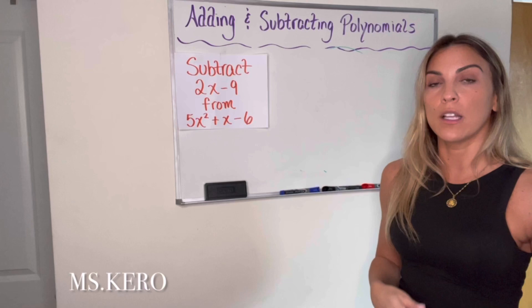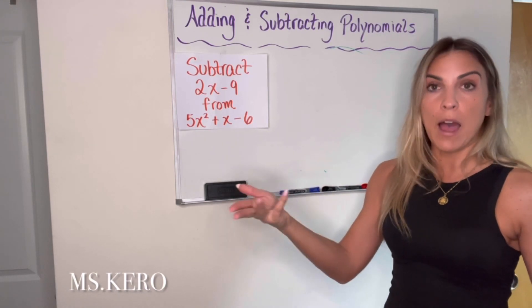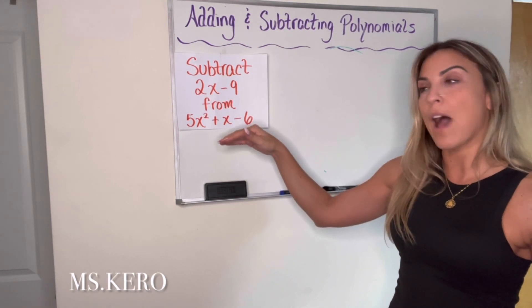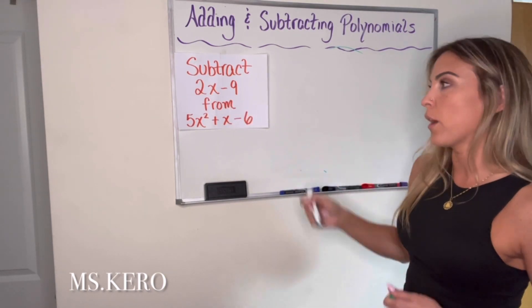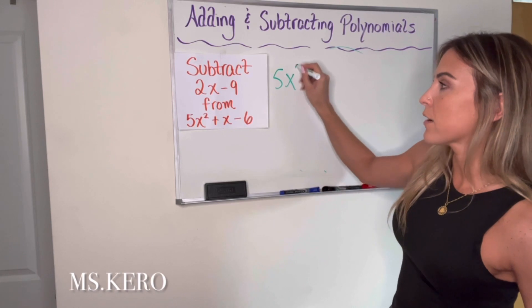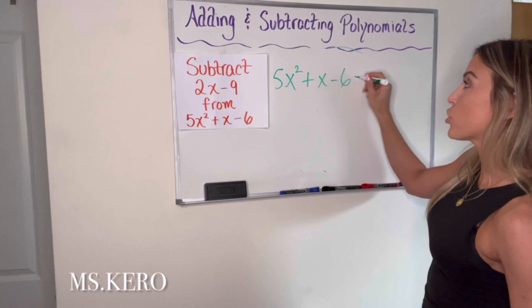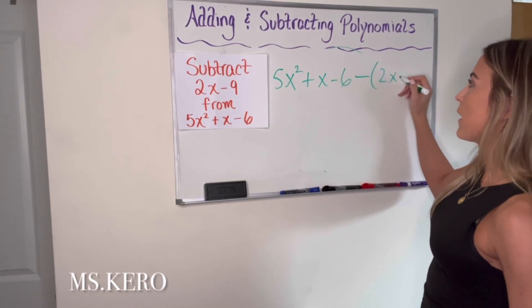So if you were subtracting 3 from 5, you would write 5 minus 3, right? The expression or the number after the word from, that's what you start with. So we've started with 5x squared plus x minus 6. And from this expression, I want to subtract 2x minus 9.